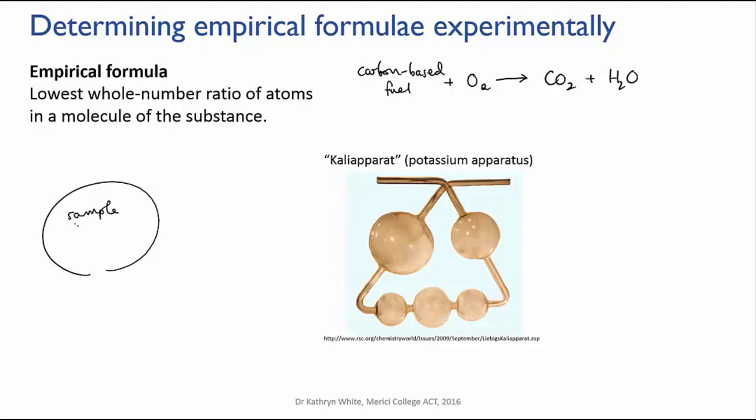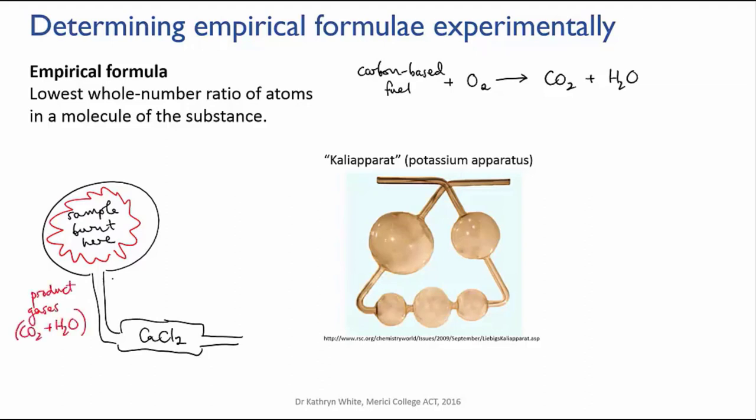Those product gases would flow first through a tube containing dry calcium chloride. This salt absorbs water, so from the increase in mass of this tube, the scientist could work out how much water was produced, and hence what mass of hydrogen had been in the original compound.